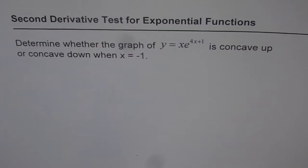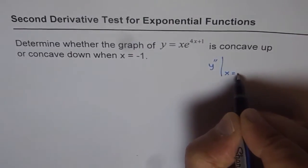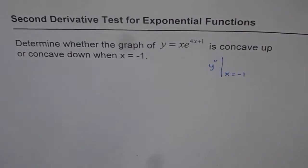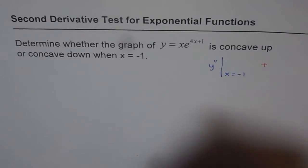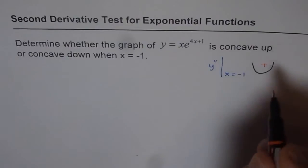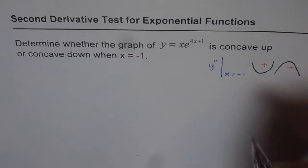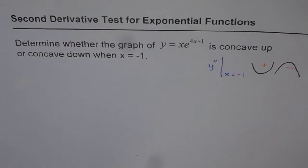In this question we are trying to figure out what is y double dash at x equals minus 1. We know if y double dash is positive then the graph is concave up, and if it is negative then the graph is concave down. So at x equals minus 1 we just need to find the second derivative — that is also called the second derivative test. It gives you the point of inflection if the concavity changes on either side of the given point.